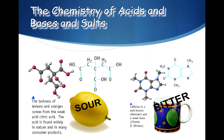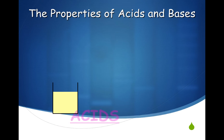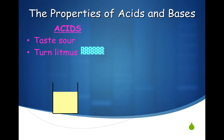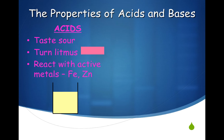Let's consider the general properties of acids and bases. Number 1: acids taste sour. Number 2: acids turn blue litmus paper red. Number 3: acids react with active metals like iron, zinc, aluminum, and magnesium to produce hydrogen gas.